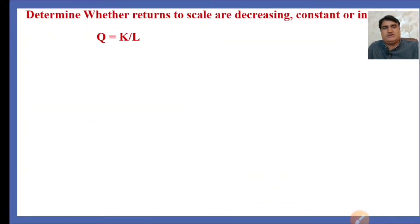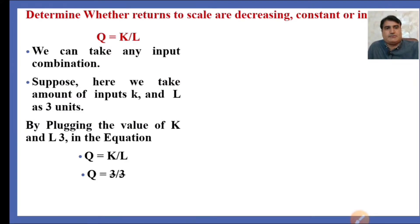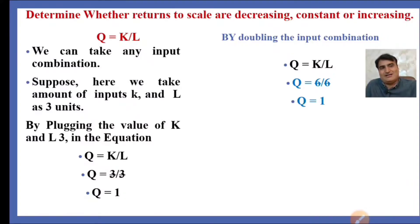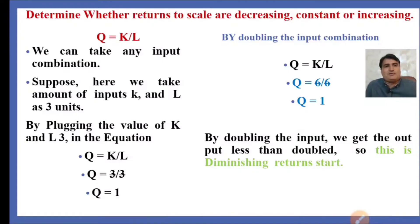We now take the production function Q = K/L. Suppose we take K and L equal to 3 units each. After plugging K=3 and L=3, the output Q0 = 1 unit. By doubling the input to K=L=6, we still get output equal to 1. After doubling the input, we have not got double output — the output is the same, which is less than double. So this is diminishing returns to scale.